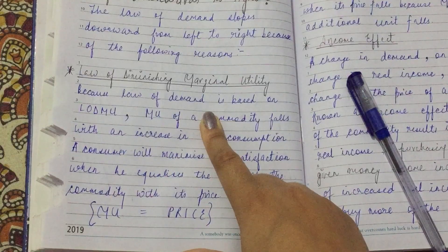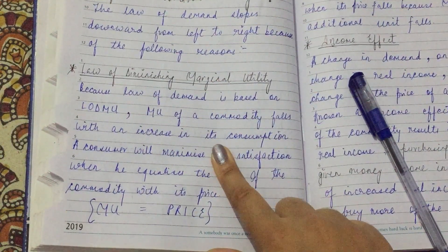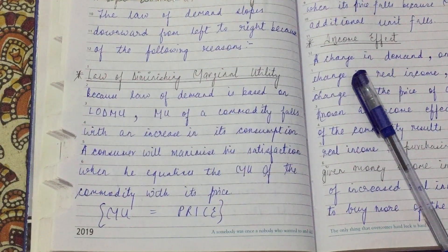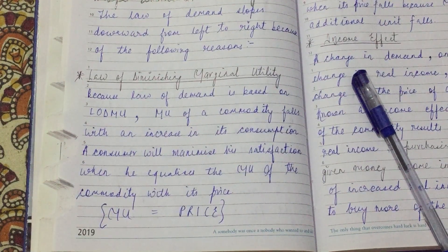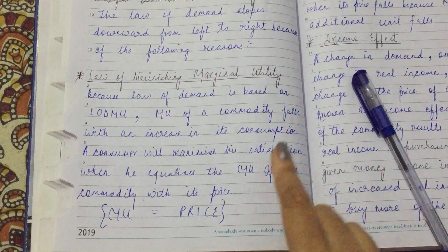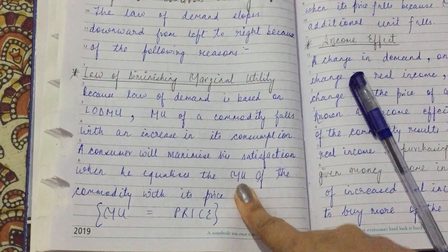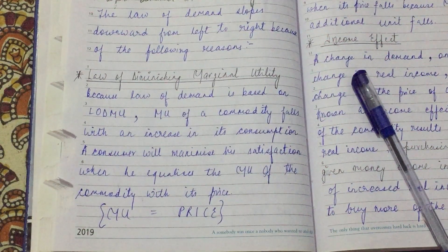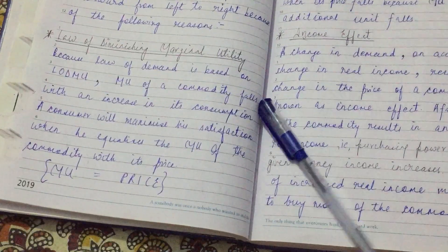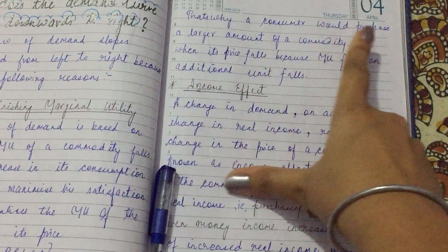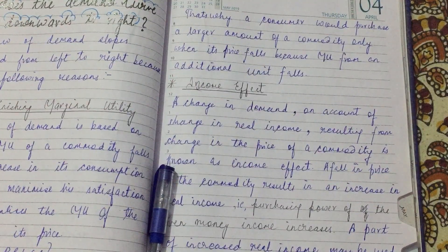Because the law of demand is based on the law of diminishing marginal utility — written in short as MU — the marginal utility of a commodity falls with an increase in its consumption. As the consumer consumes more of a commodity, the additional satisfaction (MU) falls. The consumer maximizes satisfaction where marginal utility is equal to its price.